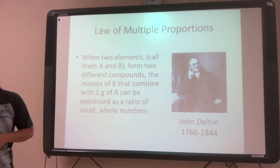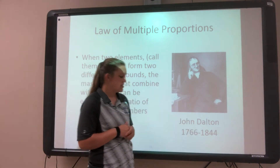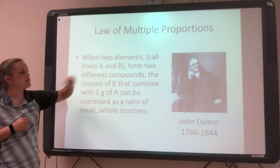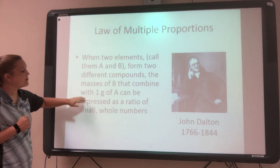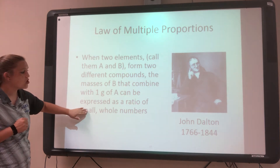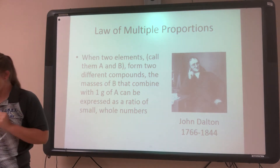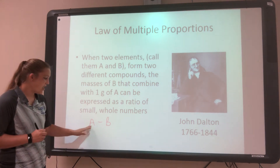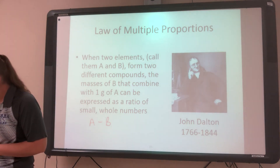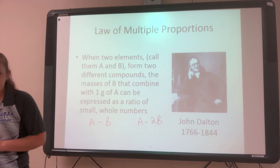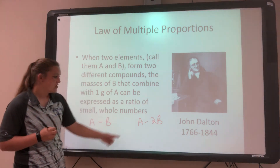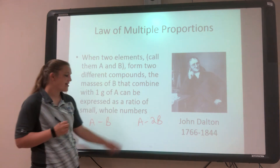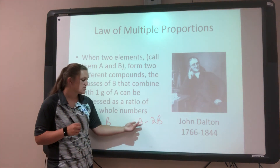Our second law is the law of multiple proportions, and this is John Dalton. His law says that when two elements — let's say element A and element B — form two different compounds, the masses of B that combine with one A can be expressed as a ratio of small whole numbers. So element A could combine with one B, a one-to-one ratio, or A could go with two Bs, a one-to-two ratio. These ratios are going to be small whole numbers — not something like 10 and 42.